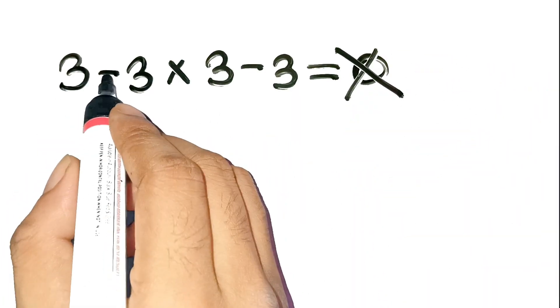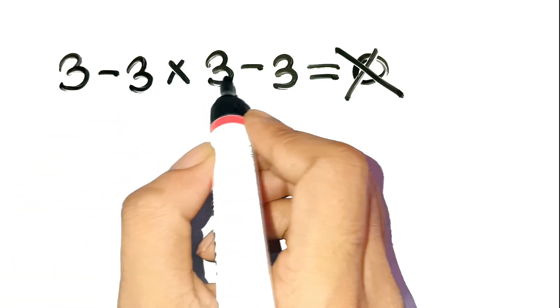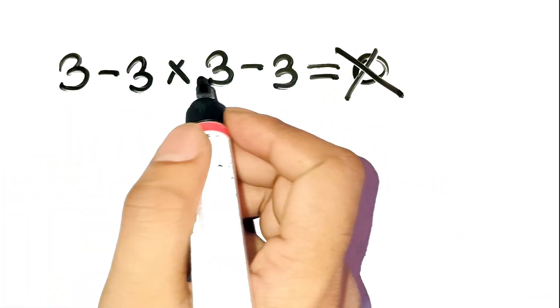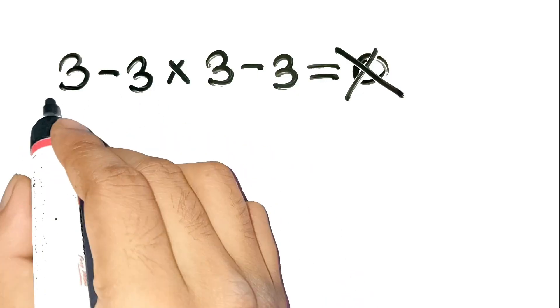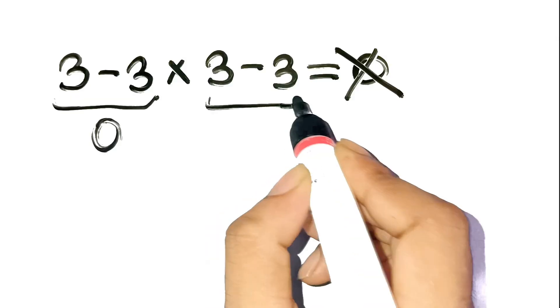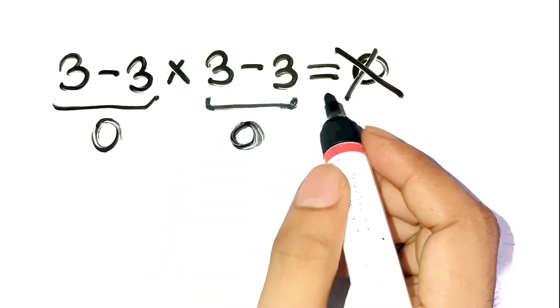We have 3 minus 3 times 3 minus 3. Now, if you're like most people, you might first do 3 minus 3 equals 0 on the left, and then 3 minus 3 equals 0 on the right.